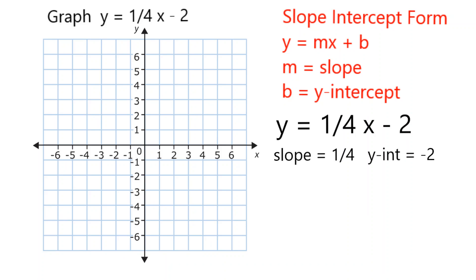We can then graph it starting with our y-intercept. So that means that the graph crosses the y-axis at negative 2. So I'm going to go ahead and put a dot there.